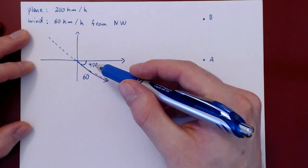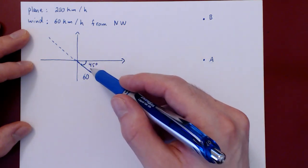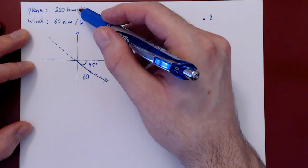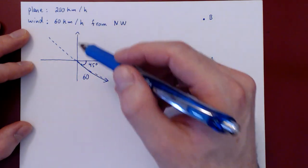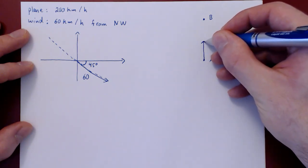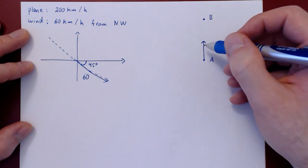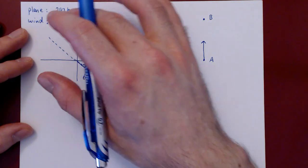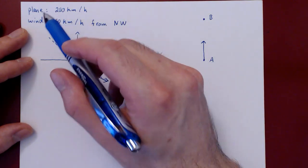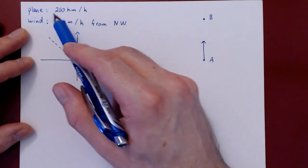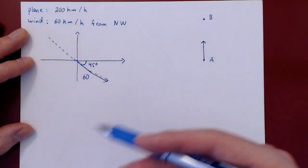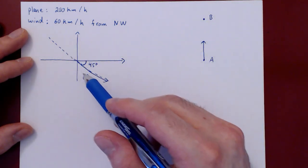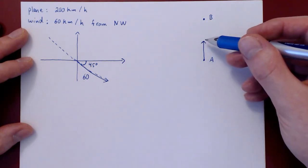We have the direction of our vector given the degrees from the x-axis, and the length of our vector is 60 kilometers per hour. We want the net result of the velocity vector of the plane with the velocity vector of the wind to give us a vector that is perfectly headed north. So let's put these two vectors together and add in the missing vector for the plane. We have the length of our velocity vector for the plane — 200 kilometers per hour — but we are missing the direction, and that's what we're trying to figure out.